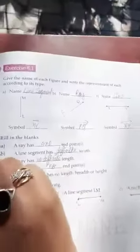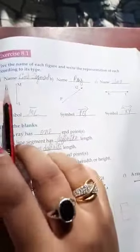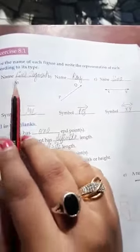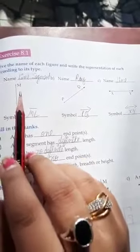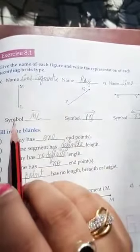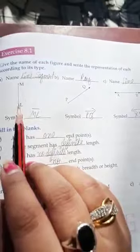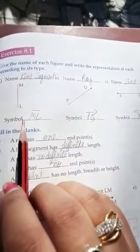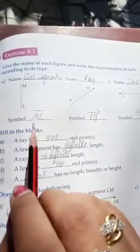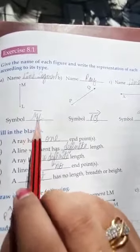Now first question is: give the name of each figure and write the representation of each according to its type. First, as it has two end points, it is a line segment. Its name symbol we will write as the two points written here, for representing a line. So its symbol will be ML and on upside of it we will draw a line.